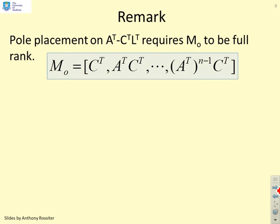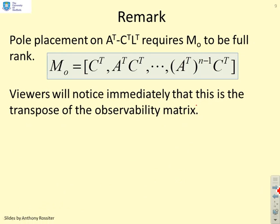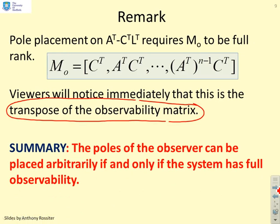Here's an important observation. Pole placement on A transposed minus C transposed L transposed requires MO to be full rank. But you'll notice that this MO is actually the transpose of the observability matrix, which was covered in the section on observability. In other words, the poles of the observer can be placed arbitrarily if and only if the system has full observability. When we did state feedback, we spent a lot of time saying first check that the system is fully controllable. Here you have an equivalent check. First check that the system is fully observable.